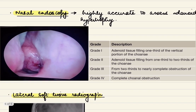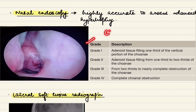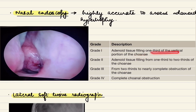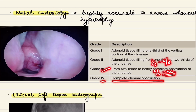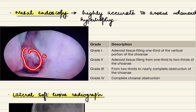For management, nasal endoscopy is highly accurate to assess adenoid size. The endoscopic grading by Clemens et al. describes the relation of adenoid enlargement to the choana: Grade 1 — adenoid fills one-third of the vertical portion of the choana; Grade 2 — one-third to two-thirds; Grade 3 — two-thirds to near complete obstruction; Grade 4 — complete choanal obstruction.